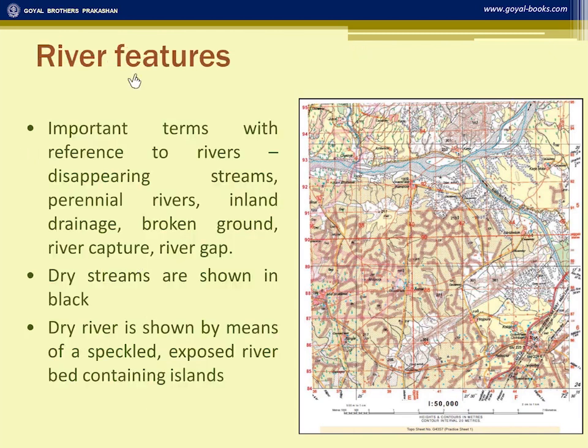Now, the various features connected with a river are many, and many questions are asked on the basis of these features. First of all, this river is dry — how can you be sure? Because you can see the river bed speckled with black dots, which shows that the river bed is exposed.